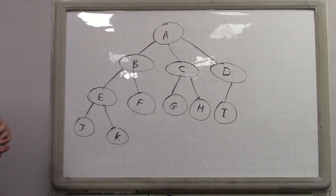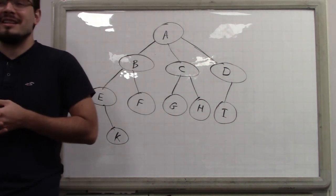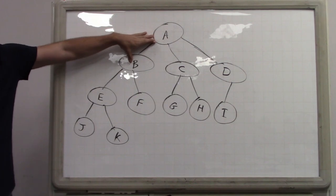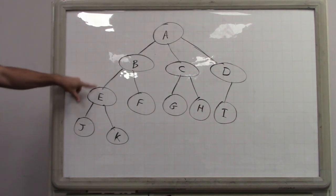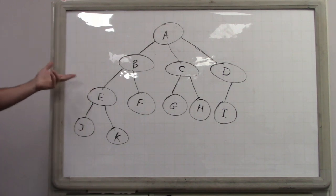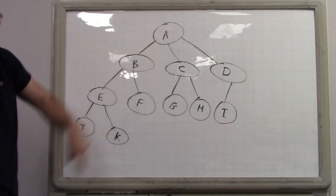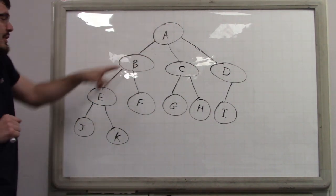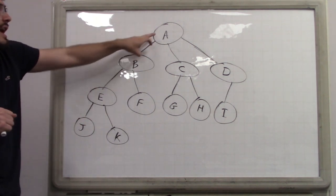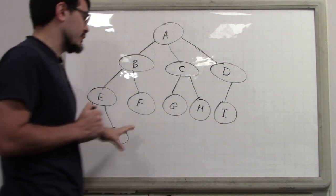The startup can actually recruit anyone it wants. The only limitation is that it can't recruit people who share an edge in this tree, because that would mean they have a boss-employee relationship. So you can recruit A and E, but you can't recruit A and B or B and E. Basically, you can't recruit two people who share the same edge.